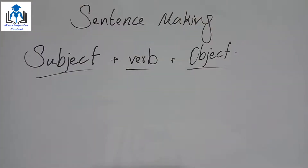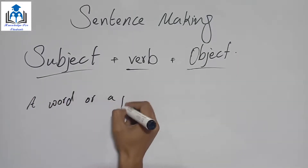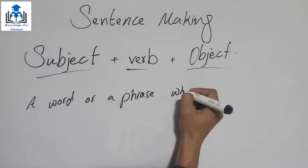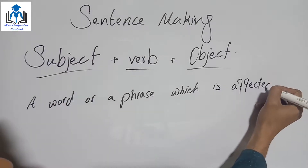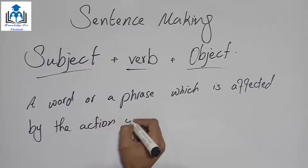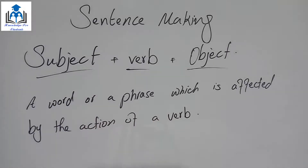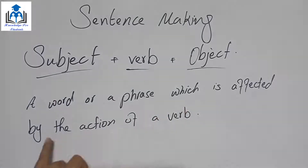Our third component is the object. An object is a word or a phrase which is affected by the action of a verb — جس پر کسی verb کا یا کسی کام کا اثر ہوا ہوتا ہے۔ In simple terms: the thing upon which the action is performed is called the object.